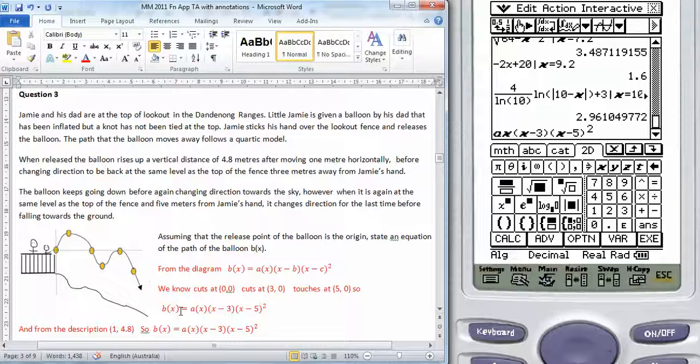So my general rule for b of x will be ax times x minus three times x minus five squared. I also know that this point here is one four point eight, so I'll use the calculator to find a.